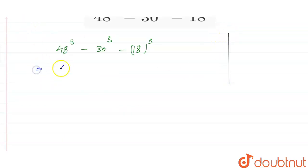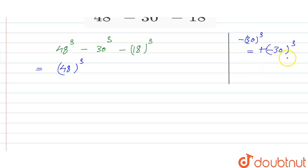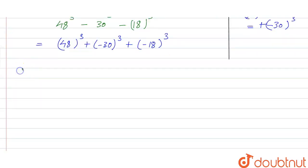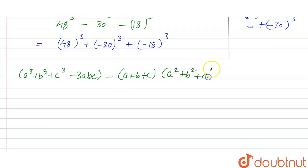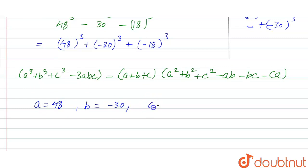We can rewrite minus 30³ as plus of (−30)³, and minus 18³ as (−18)³. We use the identity: a³ + b³ + c³ − 3abc = (a + b + c)(a² + b² + c² − ab − bc − ca). We assign a = 48, b = −30, and c = −18.